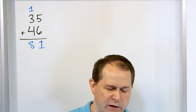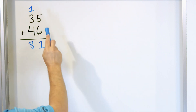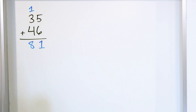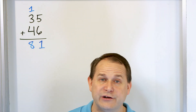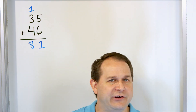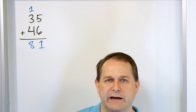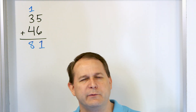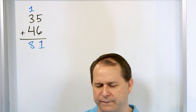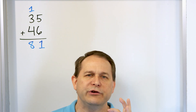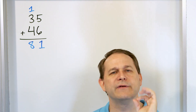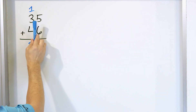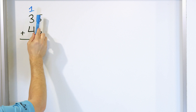Now let's see how to estimate it. What we want to do is round 35 either up or down, and round 46 either up or down. Then we take those rounded numbers, which are going to be much easier to add together, and add those together. The question is, how do we round it? Do we round to the tens? Do we round to the hundreds for larger numbers? You look at both numbers and round to the digit that is common to both numbers.